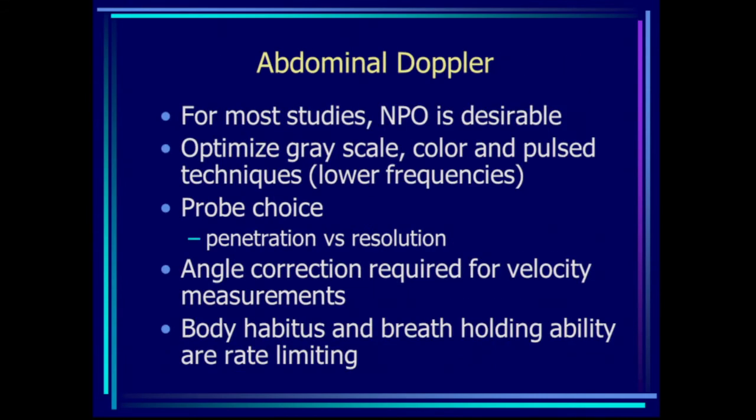It's good to start with a conversation about how we do abdominal Doppler. For most studies in the abdomen when we're looking at blood flow, NPO status is desirable. We have to remember to optimize all three techniques — grayscale, color, and pulse — and usually this requires using lower frequency probes for the penetration we need and for the best Doppler evaluation.